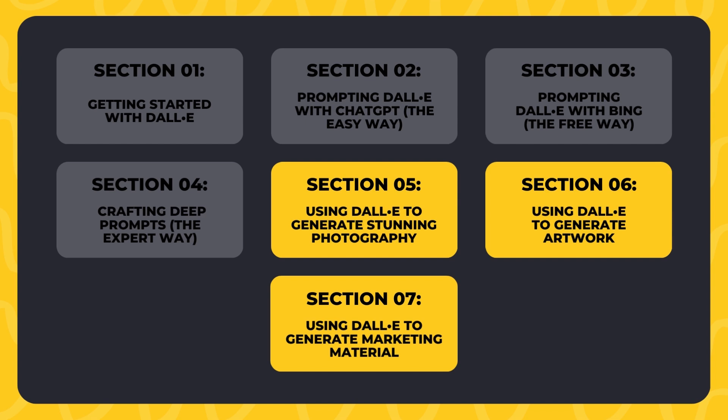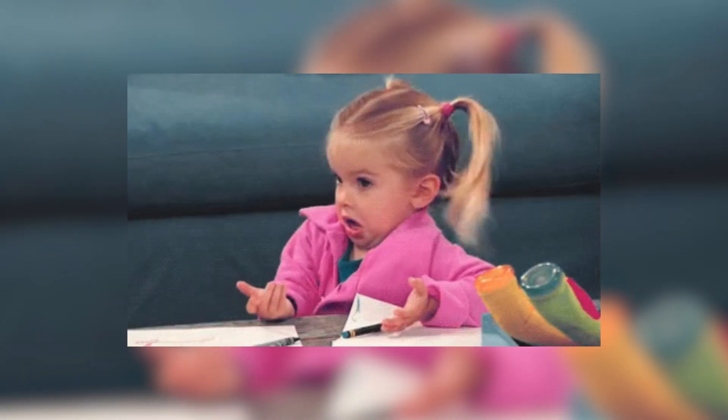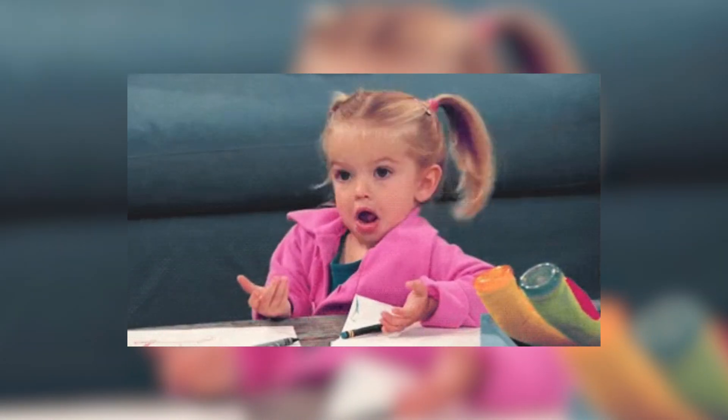The rest of the sections focus on specific ways to use DALL-E for all sorts of visual projects. Section five is dedicated to teaching you how to use DALL-E to generate realistic photography. Section six will teach you how to use DALL-E to generate all kinds of different artworks. And in section seven, we focus on how you can use DALL-E for all of your marketing efforts — answering the question: how can DALL-E help me promote my business and build my brand? Tian Yu will show you that in the course.